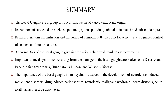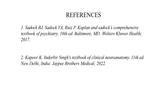In summary, the basal ganglia are a group of subcortical nuclei of varied embryonic origin. Their components are the caudate nucleus, putamen, globus pallidus, subthalamic nucleus, and substantia nigra. Their main functions are initiation and execution of complex patterns of motor activity and coordinative control of sequences of motor patterns. Abnormalities of the basal ganglia give rise to various abnormal involuntary movements. Important clinical syndromes resulting from basal ganglia damage include Parkinson's disease, Parkinsonian syndromes, Huntington's disease, and Wilson's disease. From a psychiatric perspective, the importance lies in neuroleptic-induced movement disorders, drug-induced Parkinsonism, neuroleptic malignant syndrome, acute dystonia, acute akathisia, and tardive dyskinesia. References were from the Comprehensive Textbook of Psychiatry by Kaplan and Sadock, and Inderbir Singh's Clinical Neuroanatomy.